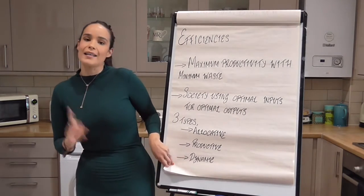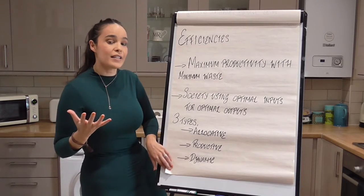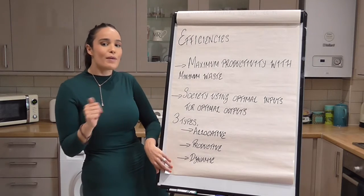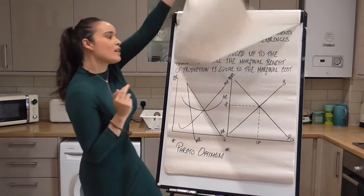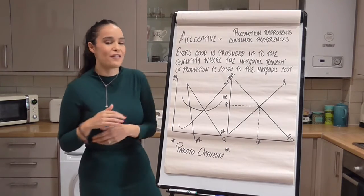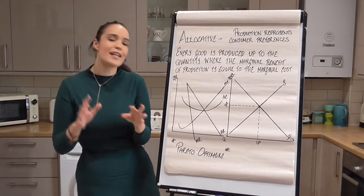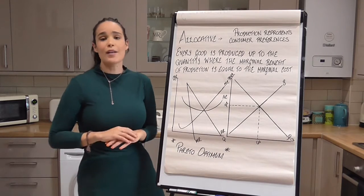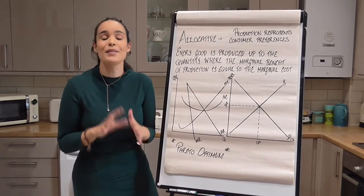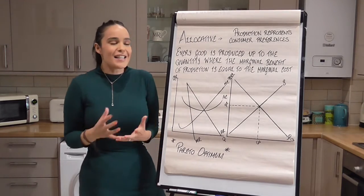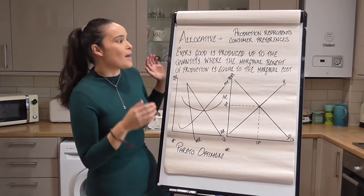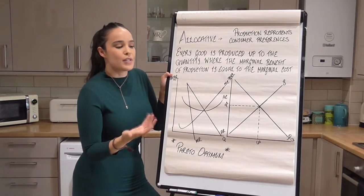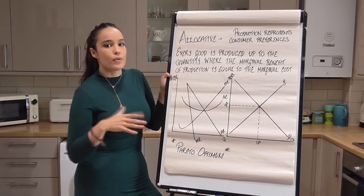The first one we're going to look at is allocative efficiency. There's lots of information here, but it really boils down to something quite simple that we already know — we learned about it in our second week of economics. Basically, all it means is that your production represents exactly what consumers want. The amount you're producing is equal to the amount that consumers want.